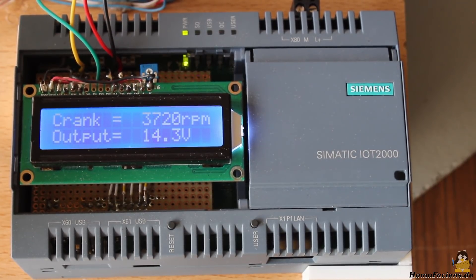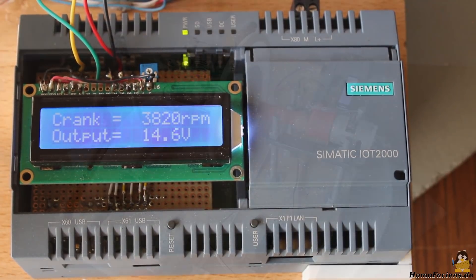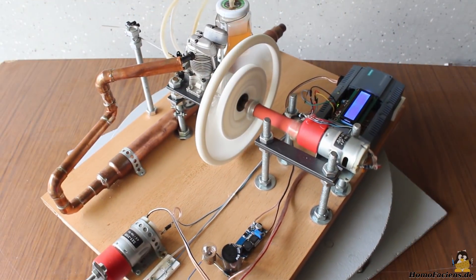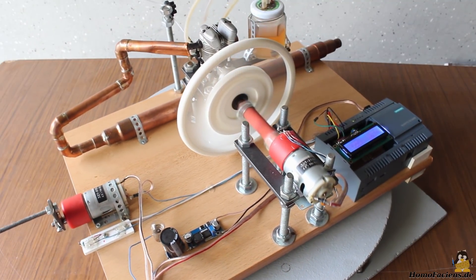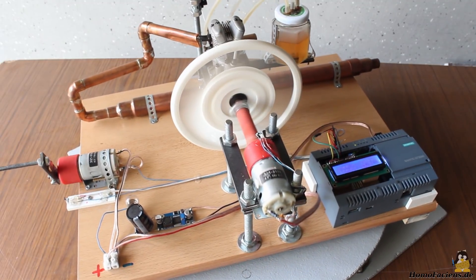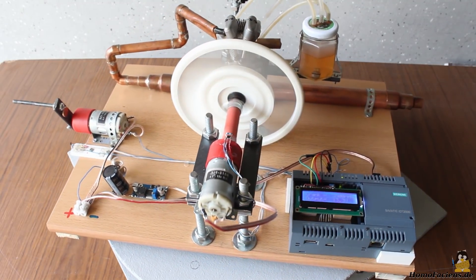At 3800 revolutions per minute we get a generator output of more than 14 volts. For this experiment I have adjusted the step-up converter to an output of 16 volts. The upper limit of the input voltage of the Simatic is 36 volts so we are still on the safe side.